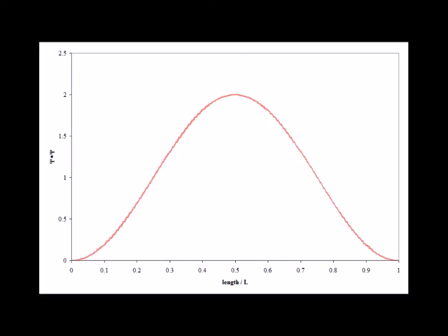The probability density psi star psi gives us the likelihood of finding a particle at a particular location. Here we see the graph of the probability density for the n equals 1 case, showing that the particle is more likely to be in the central region of the box than near the walls.